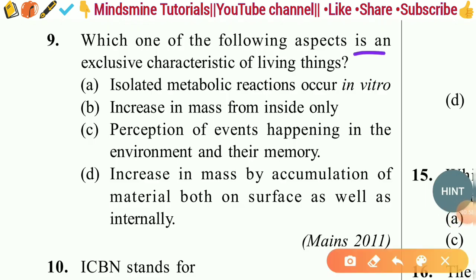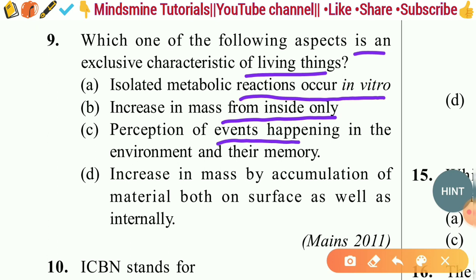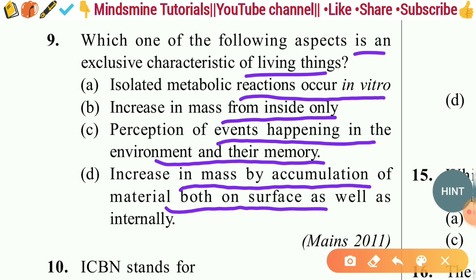Question nine: Which one of the following aspects is an exclusive characteristic of living things? Options: isolated metabolic reactions occur in vitro; increase in mass from inside only; perception of events happening in the environment and their memory; increase in mass by accumulation of material on surface as well as internally. The right answer is option C — perception of events and memory — as this is the best and exclusive characteristic of living organisms.